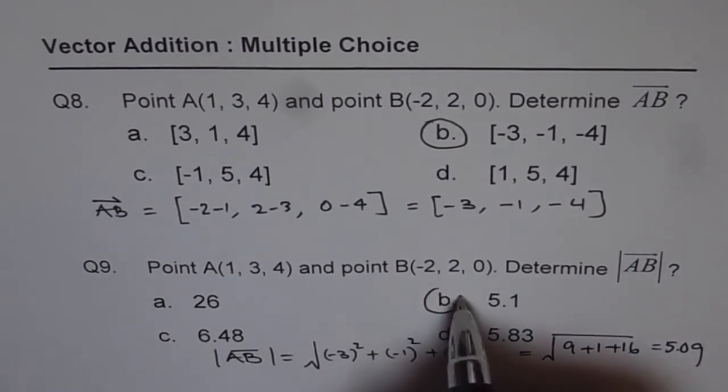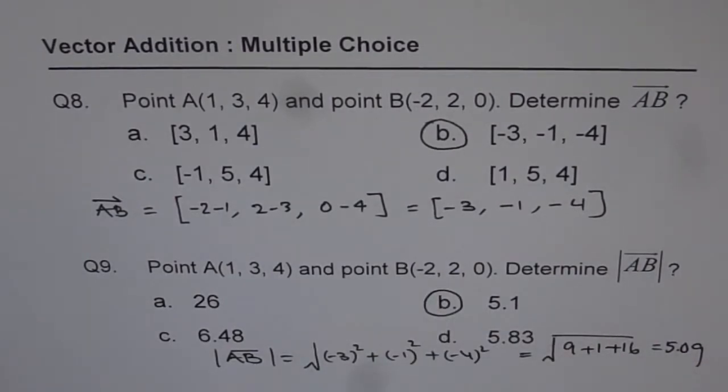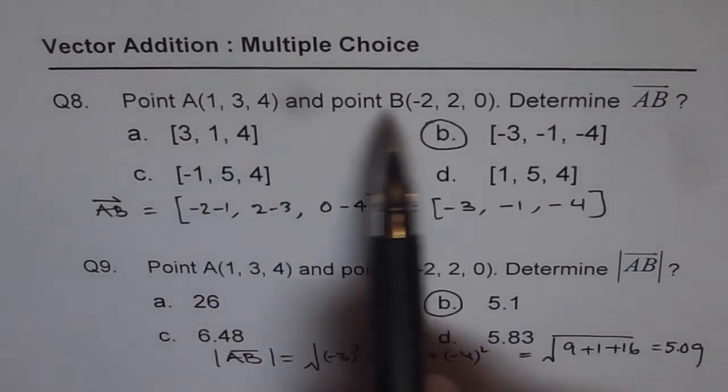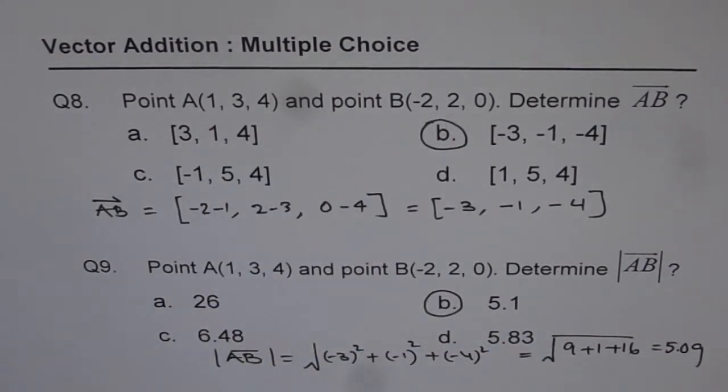So the answer closest is option B. So that is the magnitude for this vector. Remember, whenever we are talking about vectors between two points, the difference between their location corresponding direction numbers gives you the vector, and the magnitude is √(A² + B² + C²).